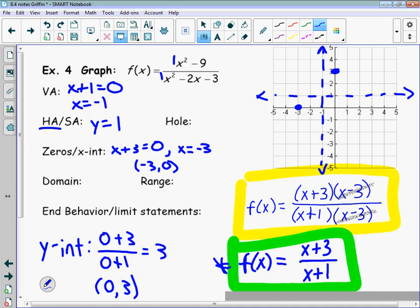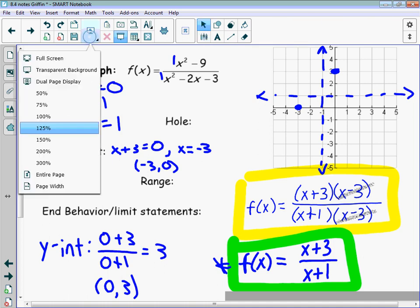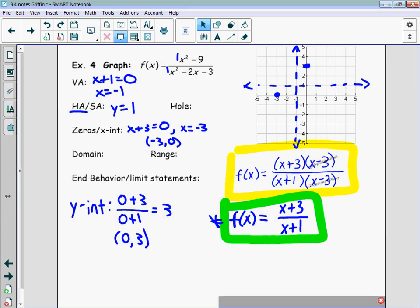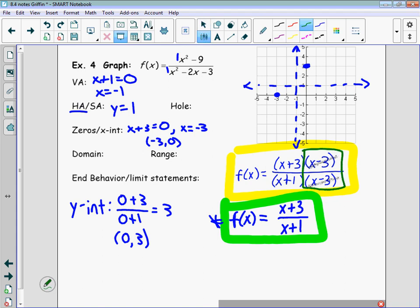So from there, now we can talk about the hole. What happens here with the hole is we end up with another restricted value. But instead of it being a vertical line like the vertical asymptote is, it will just be a gap in the graph. And the x-coordinate of the hole can be found by what makes this equal to 0. So the x-coordinate will be 3. 3 is what makes those common factors equal to 0.